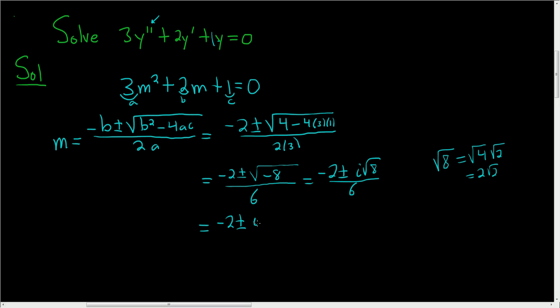So this is i 2 square root of 2 over 6. Then we can break this up. It's negative 2 over 6, plus or minus i 2 square root of 2 over 6. And so finally, m is equal to negative 1 third, plus or minus, and then the 2's cancel, so we get the square root of 2 over 3, and then we still have the i, and I'll put it on the outside.